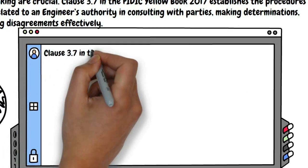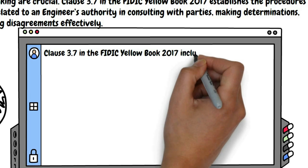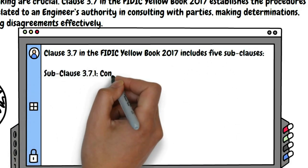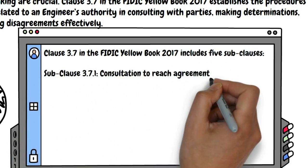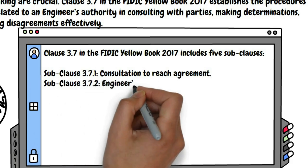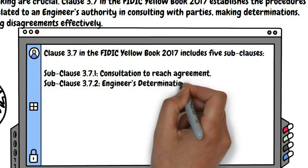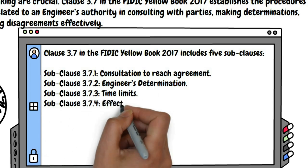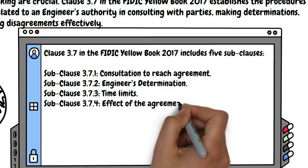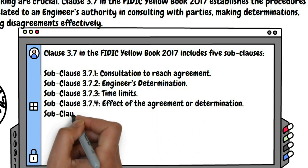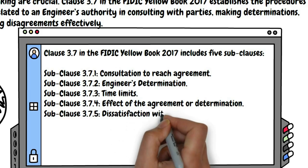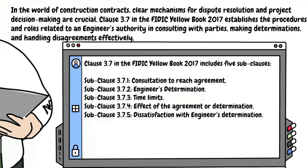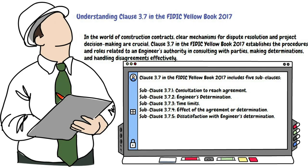Clause 3.7 in the FIDIC Yellow Book 2017 includes five sub-clauses: One, Sub-clause 3.7.1, Consultation to Reach Agreement. Two, Sub-clause 3.7.2, Engineer's Determination. Three, Sub-clause 3.7.3, Time Limits. Four, Sub-clause 3.7.4, Effect of the Agreement or Determination. Five, Sub-clause 3.7.5, Dissatisfaction with Engineer's Determination.